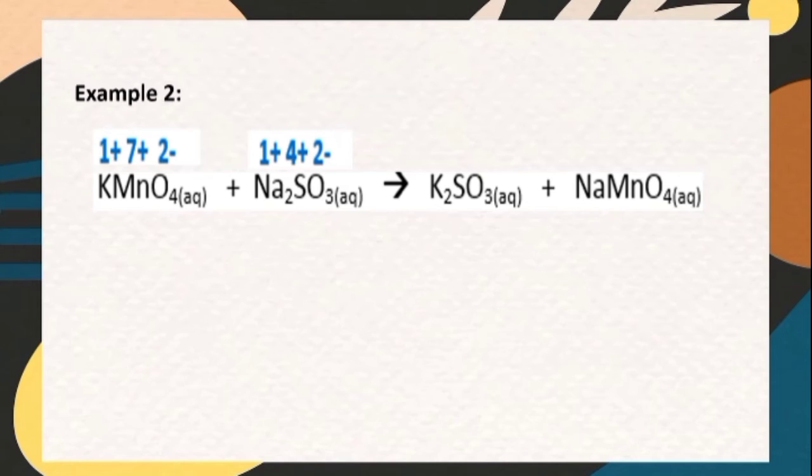For potassium sulfate, K is positive one, S is positive four, and O is negative two. And for sodium permanganate, Na is positive one, Mn is positive seven, and O is negative two.